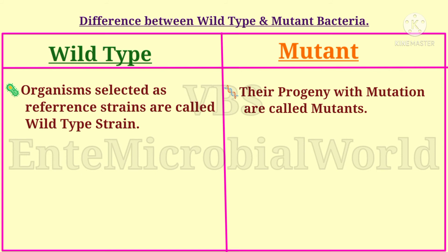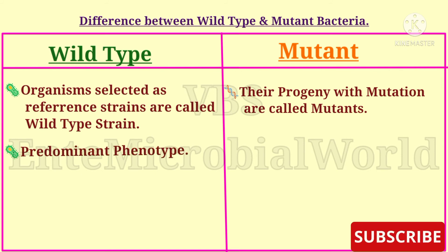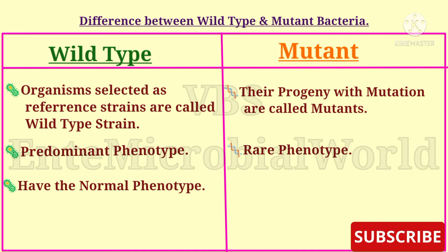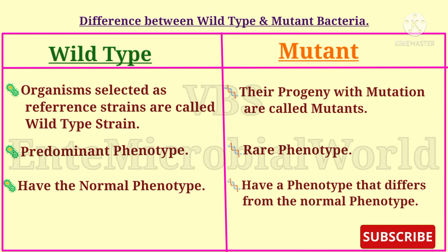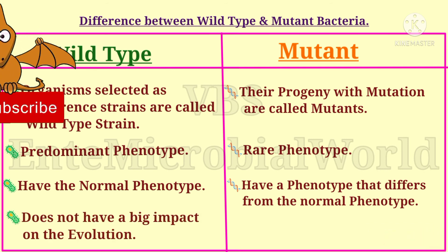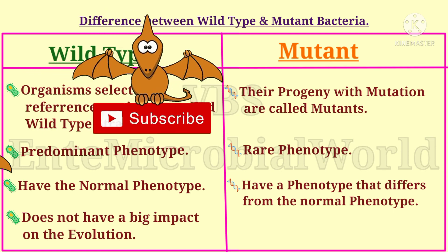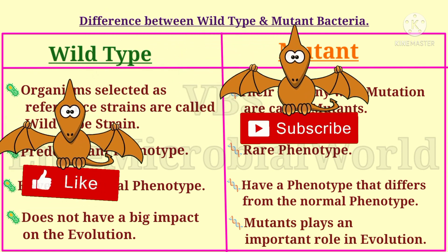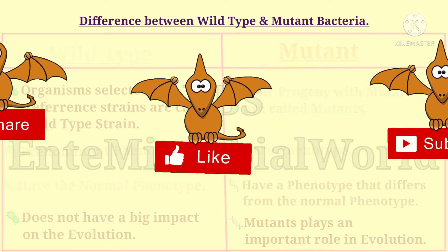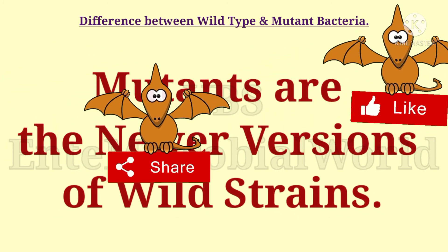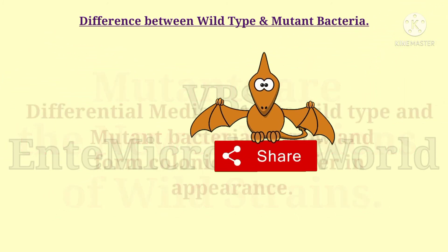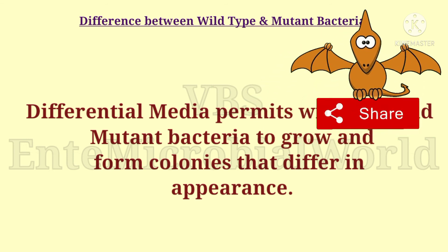The wild type is the predominant phenotype; the mutant is the rare phenotype. Wild type has the normal phenotype, while mutants have a phenotype that differs from the normal phenotype. Wild type does not have a big impact on evolution, whereas mutants play an important role in evolution. Mutants are the newer versions of wild strains.